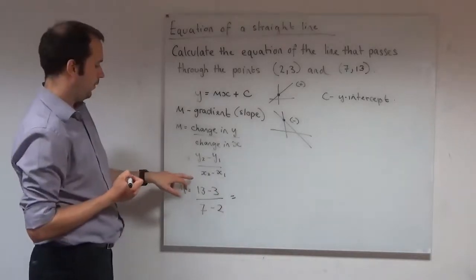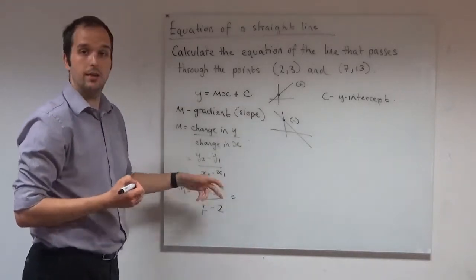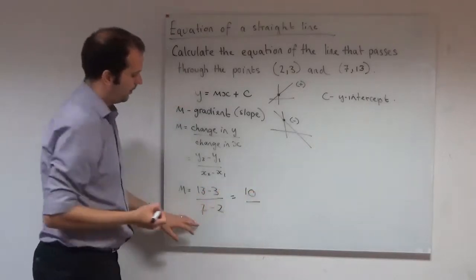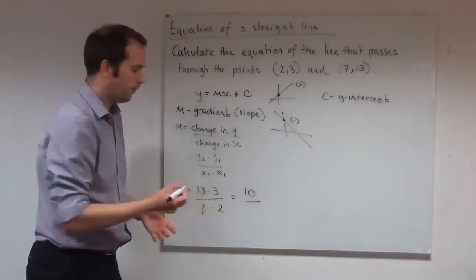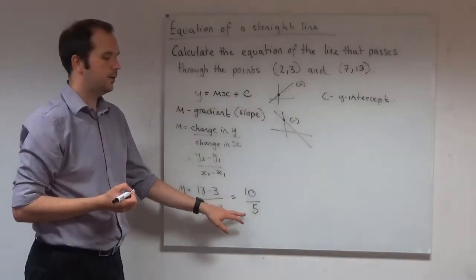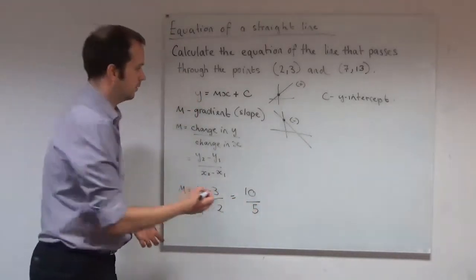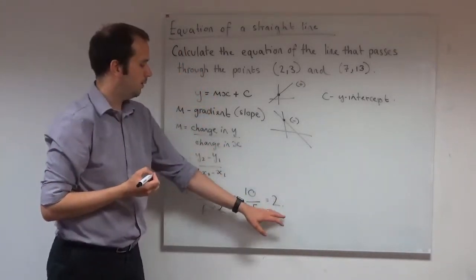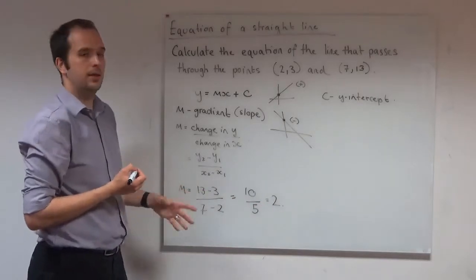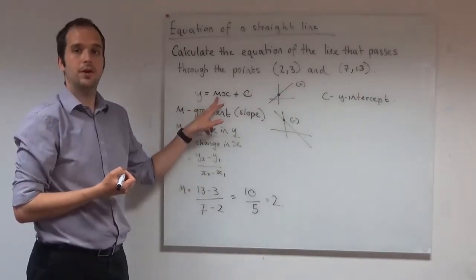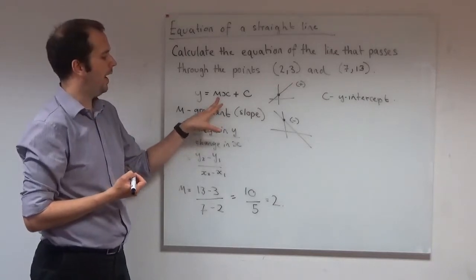Let's work those values out. What do we have? We've got 13 minus 3 is 10. And we have 7 minus 2 is 5. And we know 10 divided by 5 is 2. So we found our gradient is equal to 2. So we have this value here now. We know the number in front of our x.